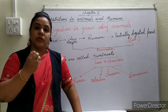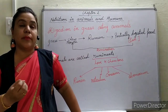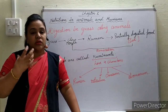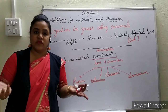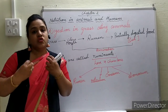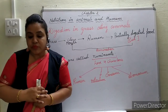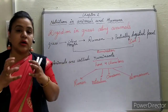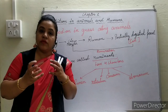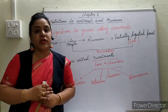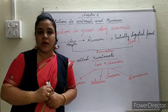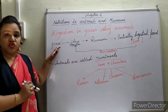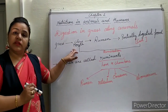Grass-eating animals, for example cows and buffalo, chew their food when they are free — even when they don't currently have any grass or food in front of them. They still do chewing. These grass-eating animals chew with the help of their mouth.